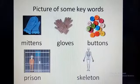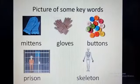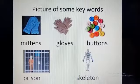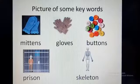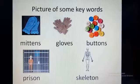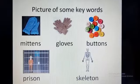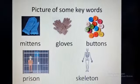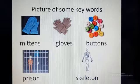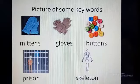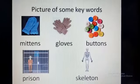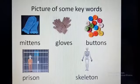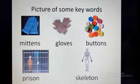Most of the keywords are known to you. I will give you the word meaning of a few difficult words later. First, see the picture of some keywords: Mitten, Gloves, Buttons, Prison, and Skeleton. Gloves is actually not included in your keywords. I have included the picture of gloves so that you can understand the difference between mittens and gloves. Mittens have only a separate thumb and are warmer than gloves. Gloves have separate fingers and are less warm.